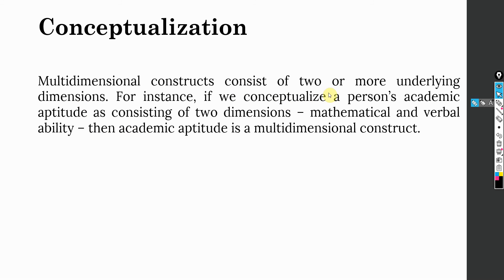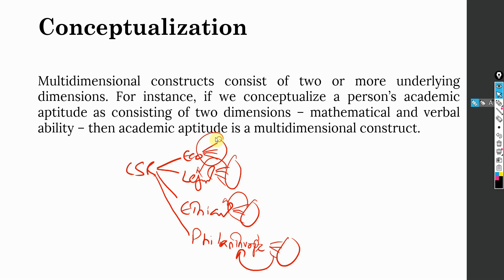Multidimensional constructs consist of two or more underlying dimensions. Let's say CSR is measured using economic dimension, legal dimension, ethical dimension, and philanthropic dimension. Each of these dimensions is then measured using different items. These items are measuring these constructs, and these items are reflective. At higher level, they may be formative. This is a higher order construct that is measured through these sub-dimensions, and each of these sub-dimensions has its own items.